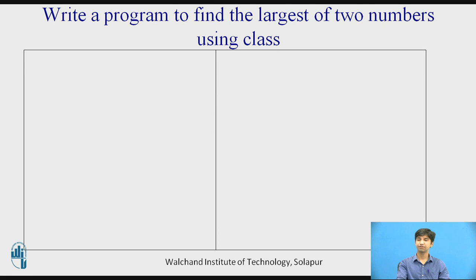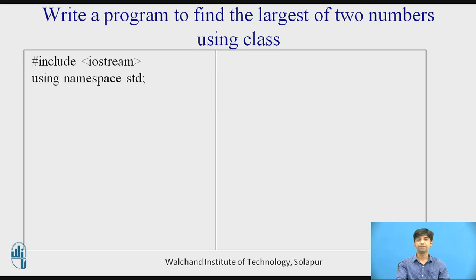In the last video lecture we wrote a C++ program which includes the header files. The same thing will apply to this program. It includes the header file: #include iostream, which is the input-output stream header file. Then, using namespace std — namespace is used to increase the scope of the identifiers. Then I will be declaring a class with the class name called set1, and opening the class bracket.